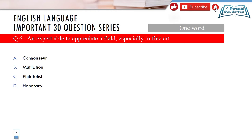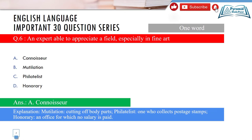Question 6 is another one-word substitution. The options are: A) connoisseur, B) mutilation, C) philatelist, D) honorary. The correct answer is option A — connoisseur — meaning an expert, especially in fine art, who can appreciate it. Mutilation means cutting of body parts. Philatelist is one who collects postage stamps. Honorary refers to an office for which no salary is paid.